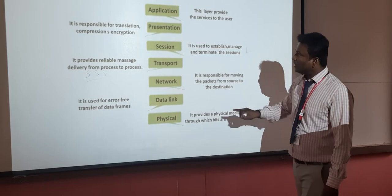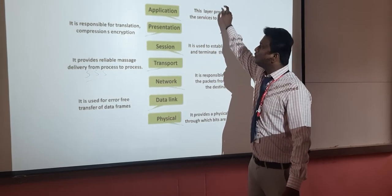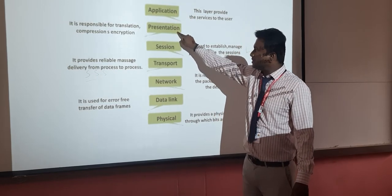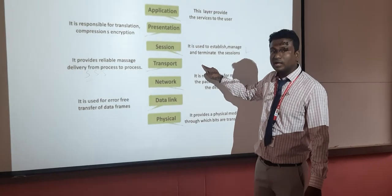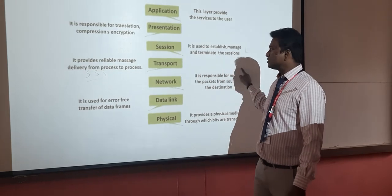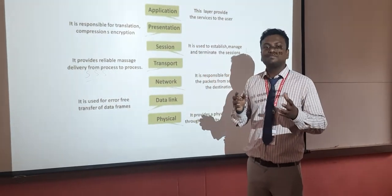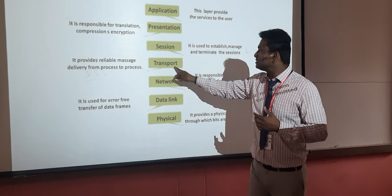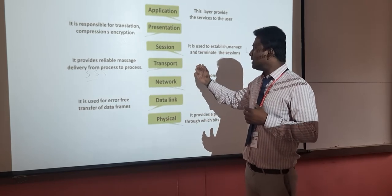So the data at the transport layer is converted into segments. For example, suppose the data is a message 'Hello World' — when it arrives at the transport layer, this data is converted into segments by adding source number and destination number. Each and every segment is identified in the transport layer.